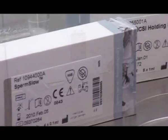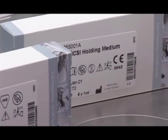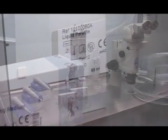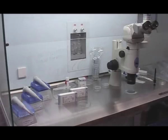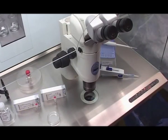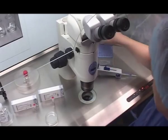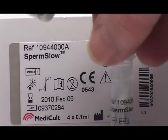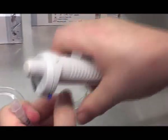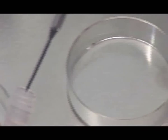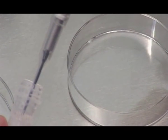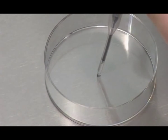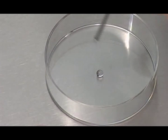Place the pre-cleaned packages of SpermSlow holding medium and liquid paraffin oil on the heated surface of the workbench. Pipette two ten microliter drops of SpermSlow onto the bottom of the dish, which should be kept at 37 degrees centigrade during the entire procedure.